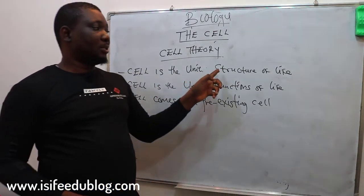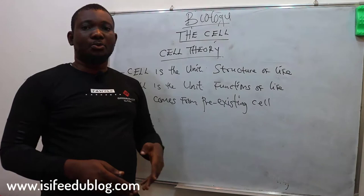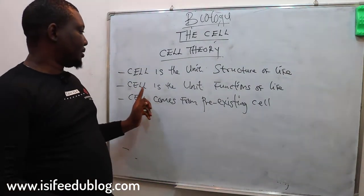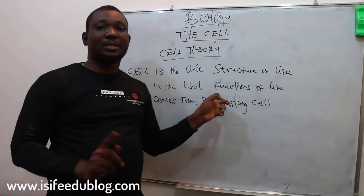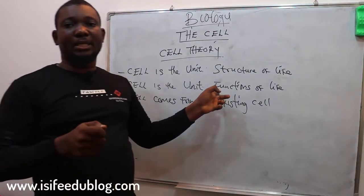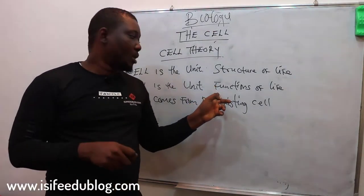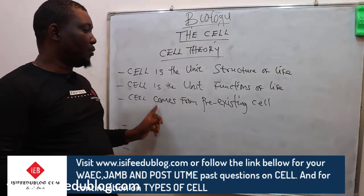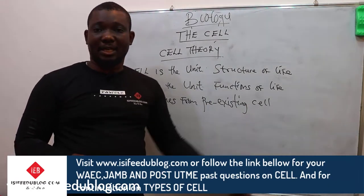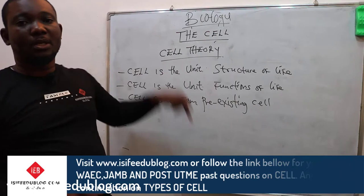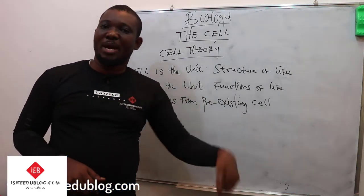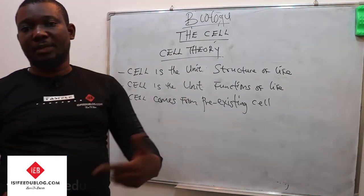The unit structure means the cell is structured to sustain life. They also say that the cell is the unit of function — that all cells are functional, and that's why life depends on the cell. And then cells come from pre-existent cells, meaning a cell that is living now has come from older cells. This happens by mitosis, a type of cell division.